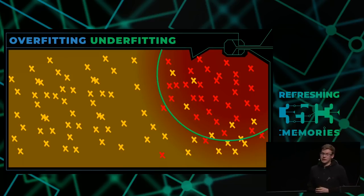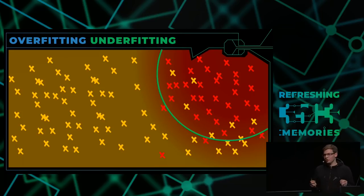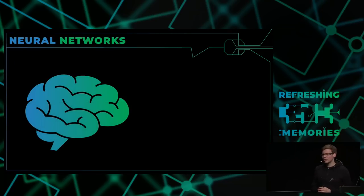Bei Machine Learning ist die Aufgabe eben, diese perfekte Kurve zu finden. Schauen wir uns also ein anderes Modell an — Neuronale Netze.